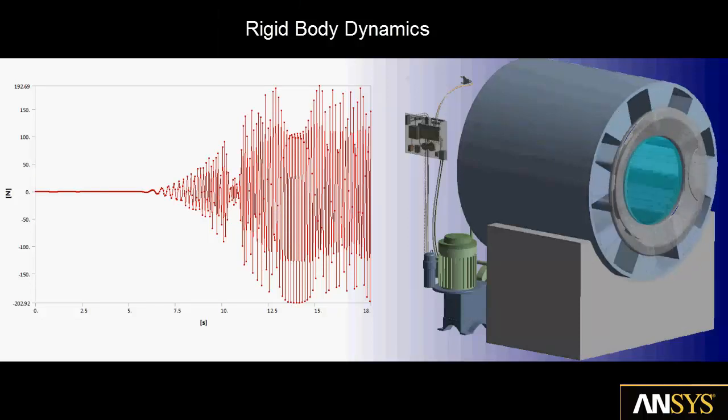Rigid body dynamics analysis predicts the stresses and transient behavior of the complex 3D structure encountered during washing machine operation based upon the input forces and torques from the electric motor.